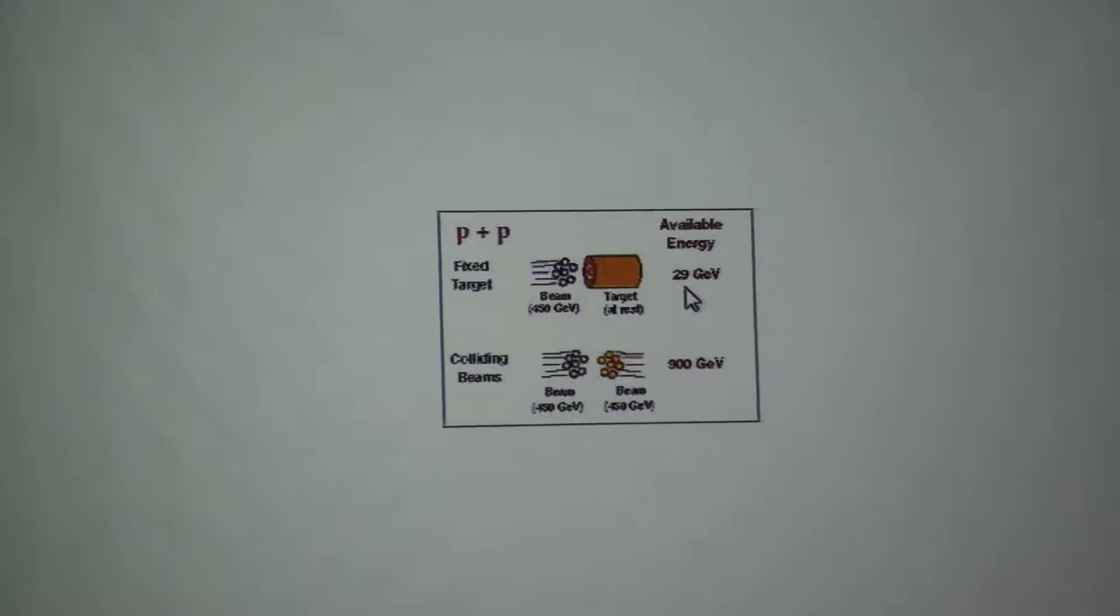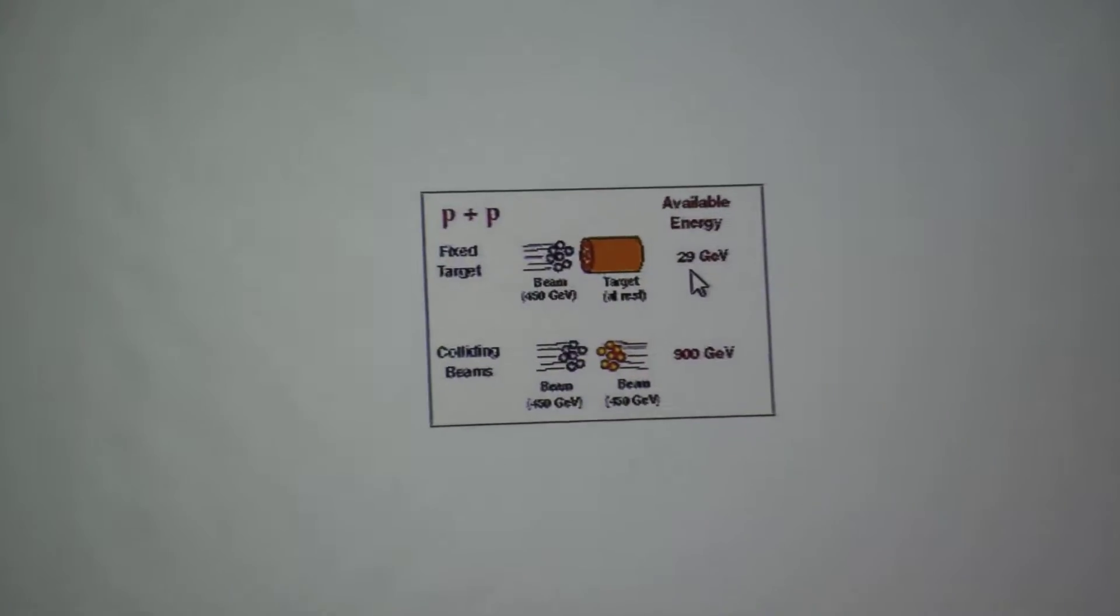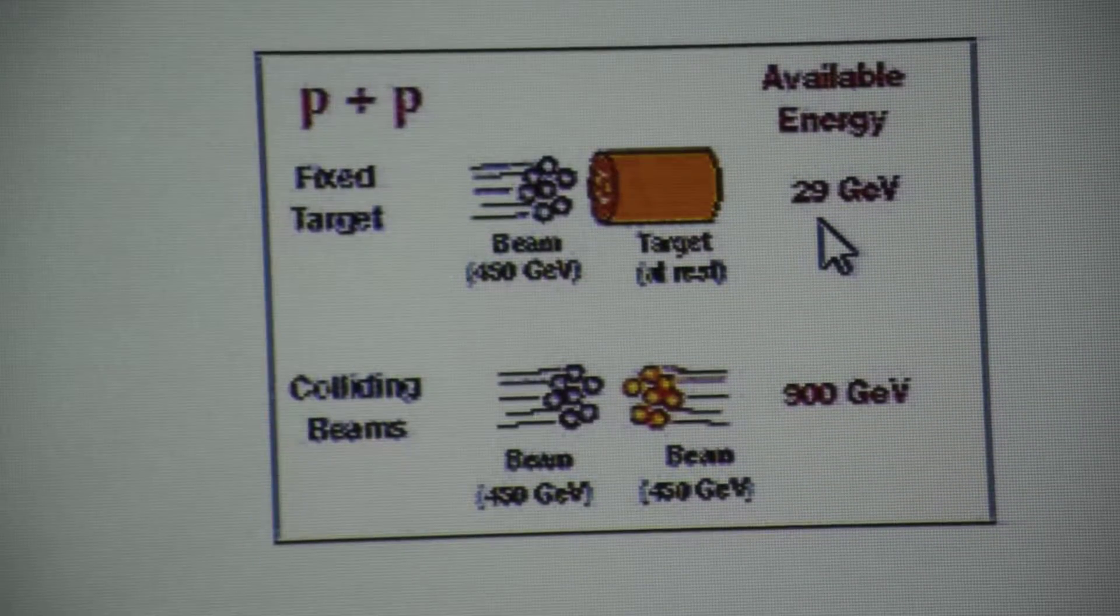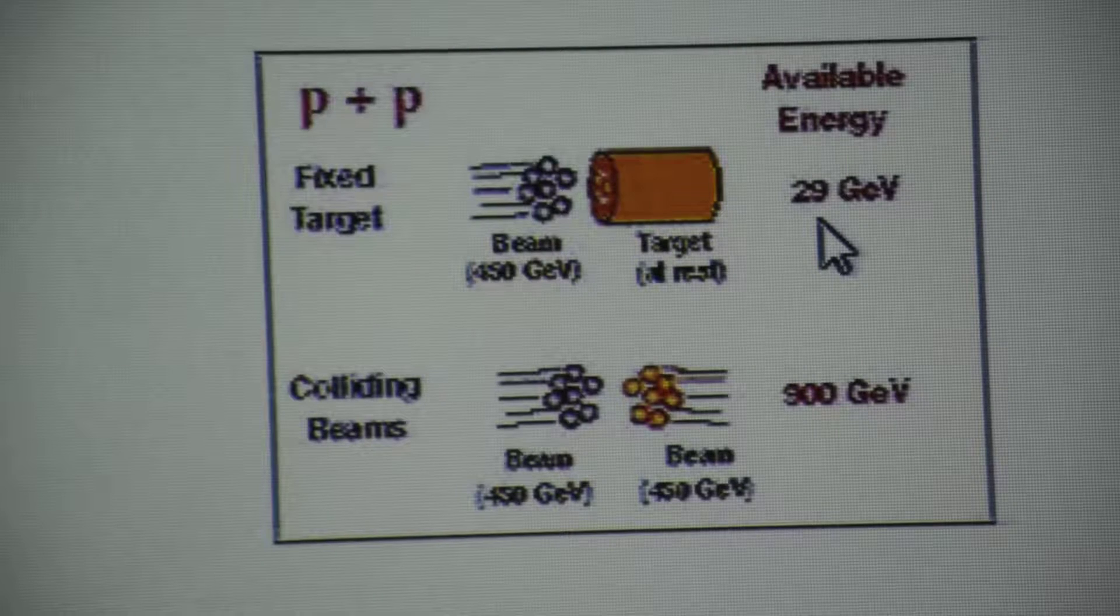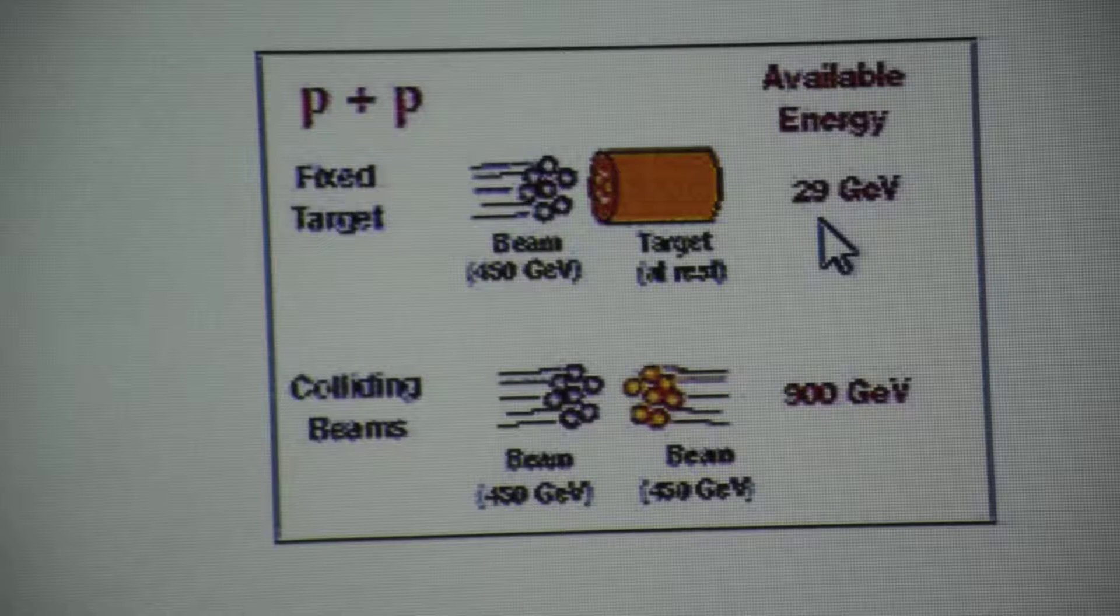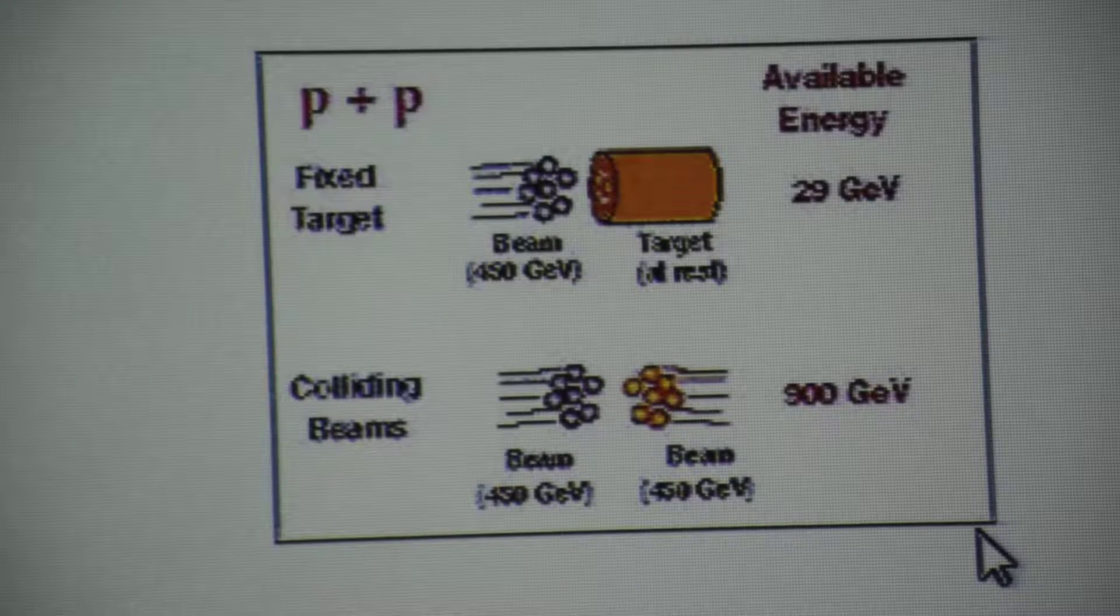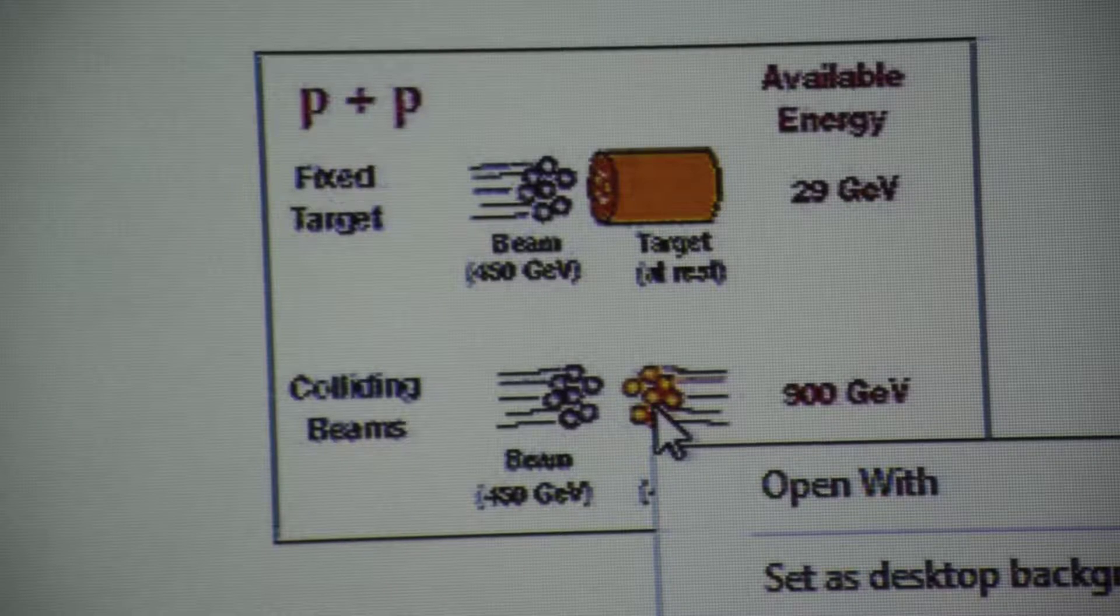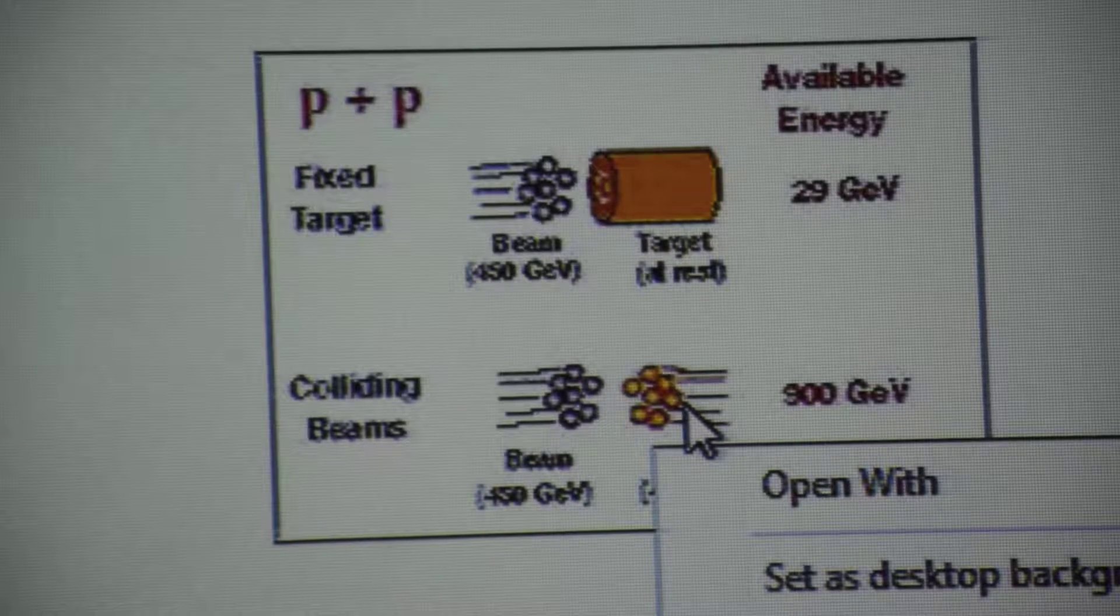That is, if you are interested in producing a single particle, you have the possibility of producing a 29 GeV particle. Now of course energy costs money. You cannot energize particles without spending tremendous amount of money. Therefore one would like some kind of economy. And what is that? Why don't you make the lab frame equal to the center of mass frame? That is, you have two beams moving with equal and opposite momentum.